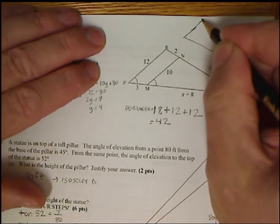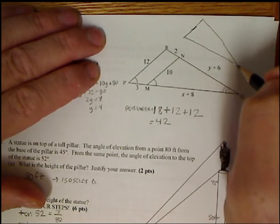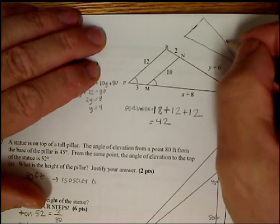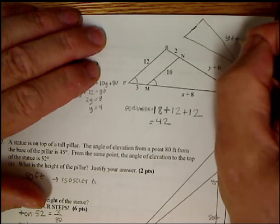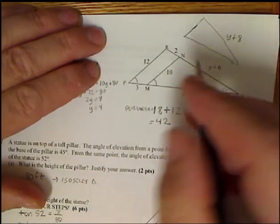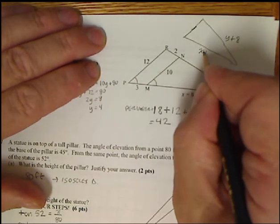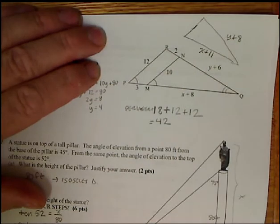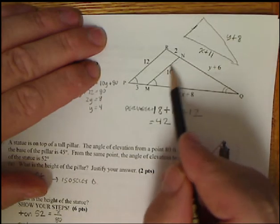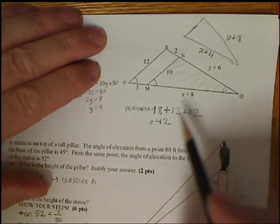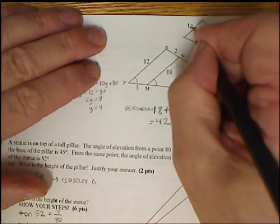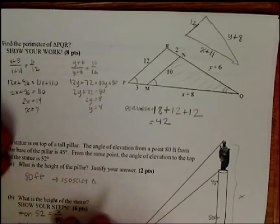That's representing the entire triangle going around. Well, this side is Y plus 8, because Y plus 6 plus 2. Down here I've got X plus 11. So now I'm going to match up this small triangle that's here with the large triangle which I just drew off to the side. And then this side right here is 12.